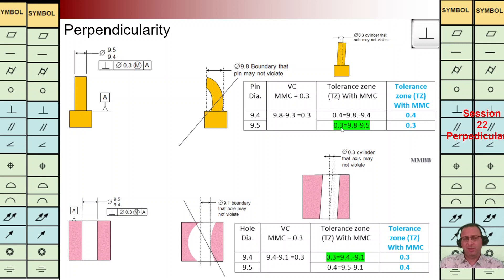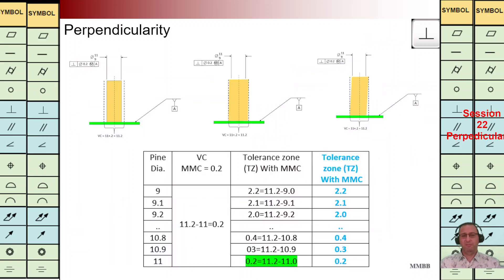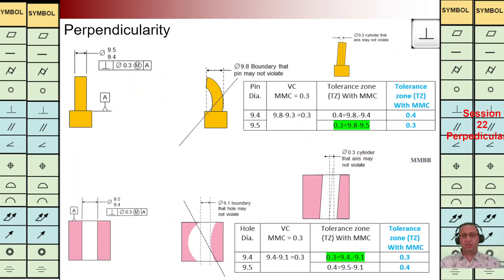For MMC, when we have the largest value of pin diameter we are going to have Tz 0.3. For other values of pin diameter we can calculate what the value of Tz should be, as listed in the last column. I would like to close this session — in the next session I'm going to talk about perpendicularity with more examples. Thank you for today, I hope you enjoyed it. See you next time.